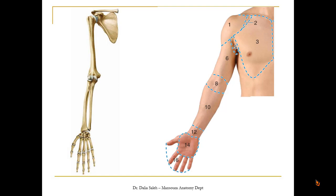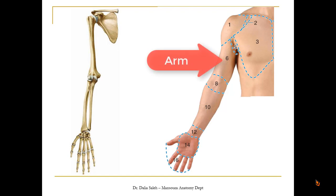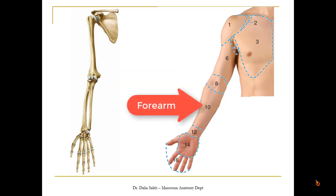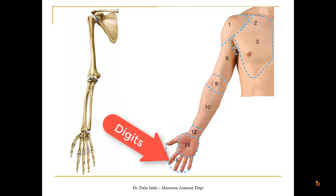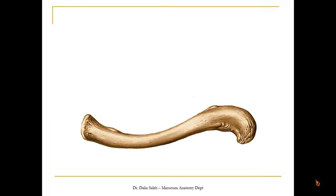Let's first revise the different regions of the upper limb. We have here the deltoid region, the pectoral region, and between them lies the deltopectoral groove. Between the arm and the side of the chest we have the axilla, the cubital fossa in front of the elbow, then the forearm, the carpal or wrist region, the palm of the hand, and finally the digits.